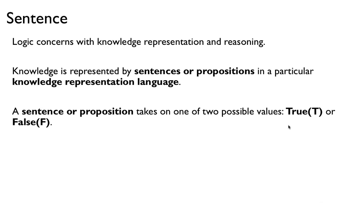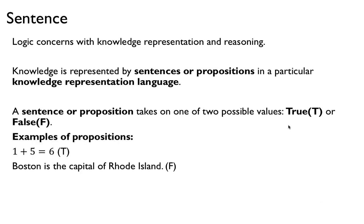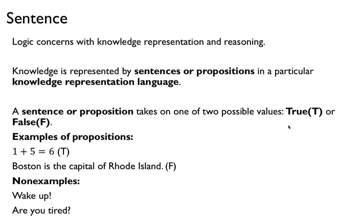A sentence or a proposition takes on one of two possible values, true or false. For example, '1 plus 5 is 6' is a true proposition. 'Boston is the capital of Rhode Island' is a false sentence or proposition. Here are some non-examples: 'Wake up' and 'Are you tired?' are not propositions because they don't have a true or false value. 'Wake up' is a command, 'are you tired?' is a question — those are non-examples.